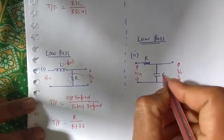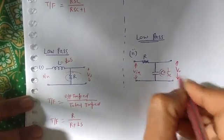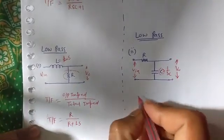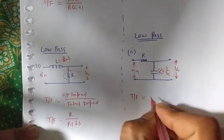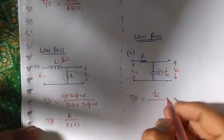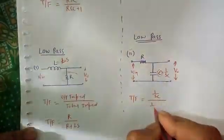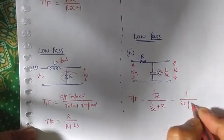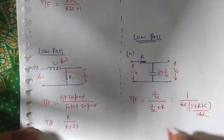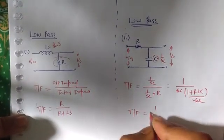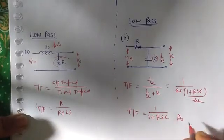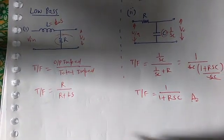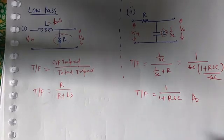For this low pass filter with a capacitor, we replace the capacitor by 1/SC and the inductor by LS. The transfer function is output impedance, which is 1/SC, upon total impedance, which is 1/SC plus R. That gives 1/SC divided by 1 plus RSC over SC, so the transfer function simplifies to 1 upon 1 plus RSC. In the next lecture, we will learn how to write the transfer function of band pass and band reject filters.